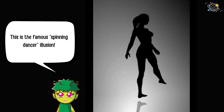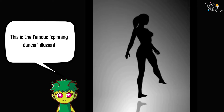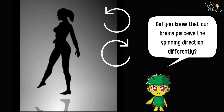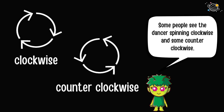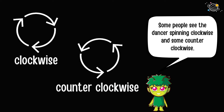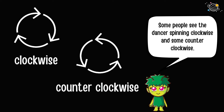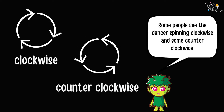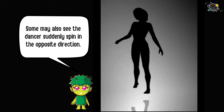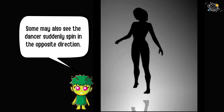This is the famous spinning dancer illusion. Did you know that our brains perceive the spinning direction differently? Some people see the dancer spinning clockwise and some counterclockwise. Some may also see the dancer suddenly spin in the opposite direction.